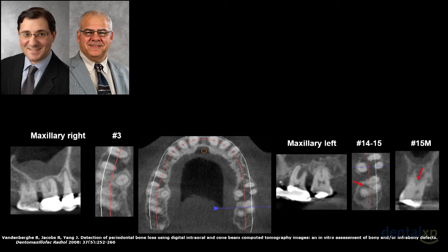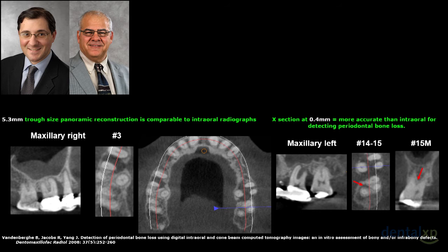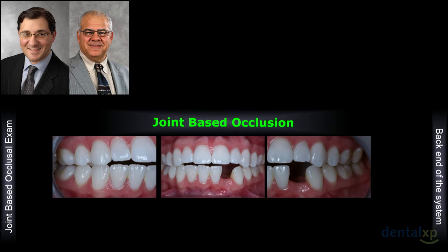There's also literature to support that a 5.3-millimeter trough size in the panoramic reconstruction in CareStream software is comparable to intraoral radiographs. A cross-section of 0.4 millimeters is actually more accurate at detecting periodontal bone loss than traditional x-rays.